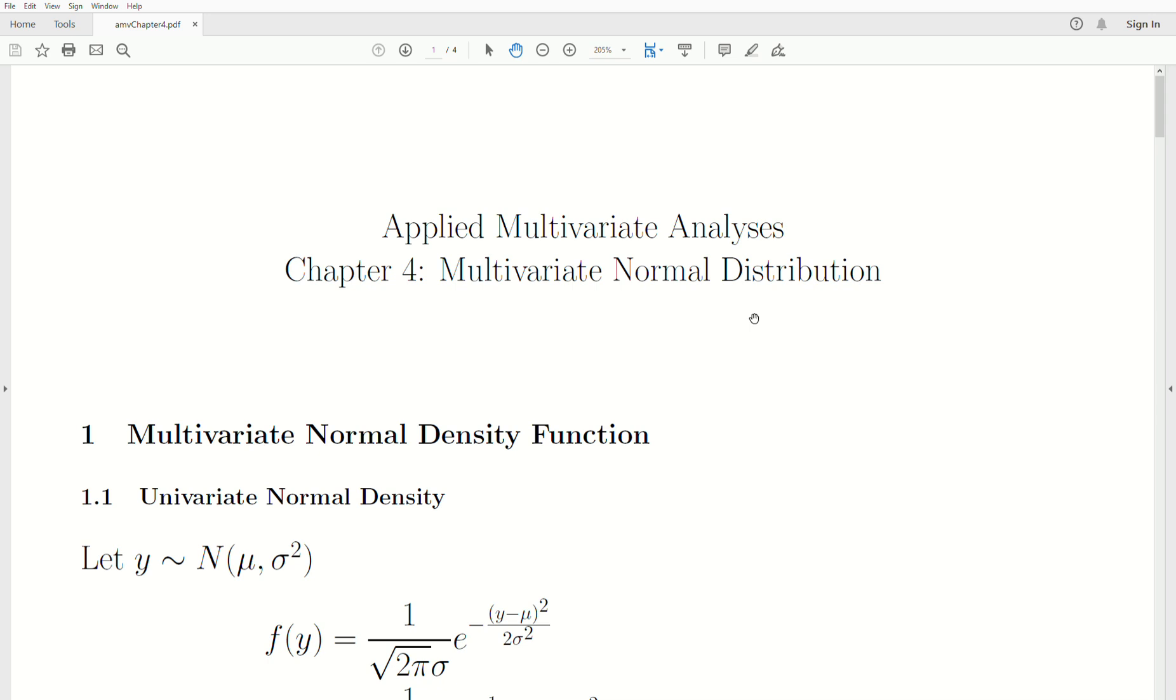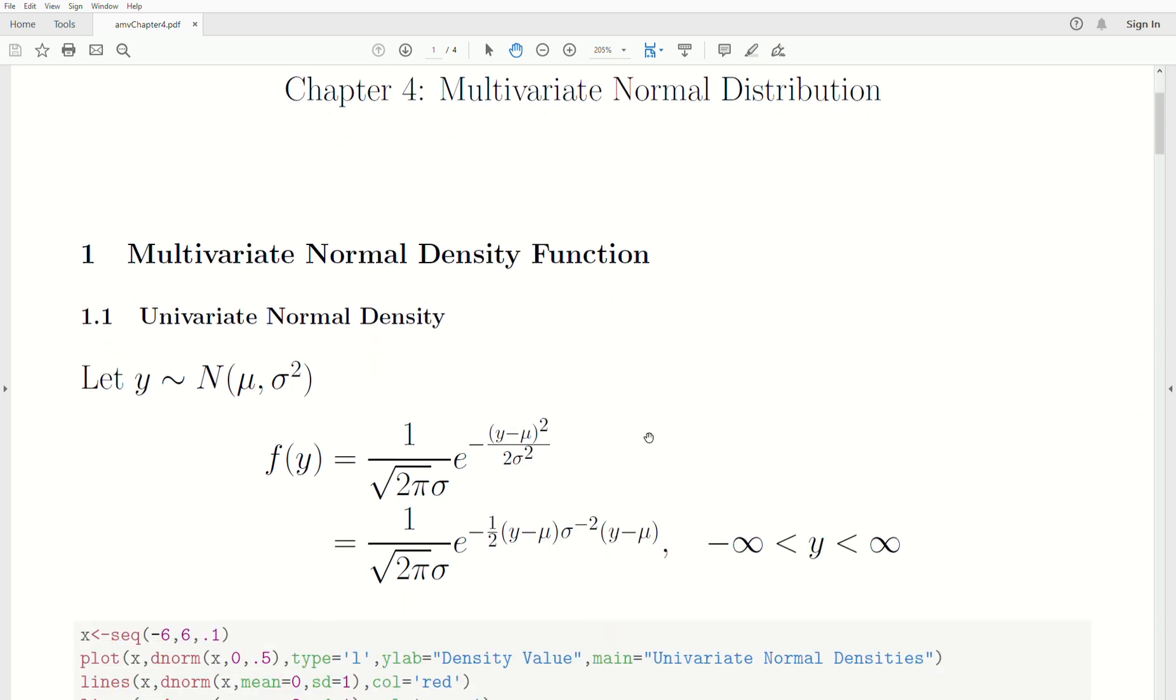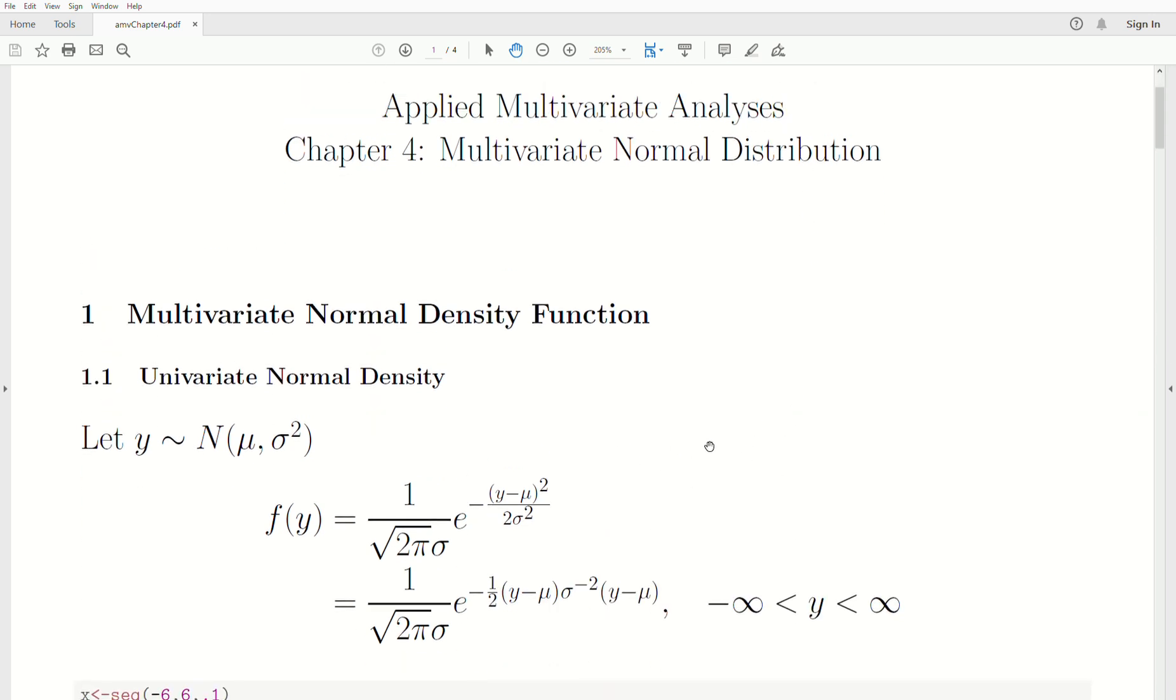Now, every multivariate technique that we're going to discuss relies heavily on this multivariate normal distribution, so it's important that we understand it and we understand many of the properties associated with it. So, let's first look at the univariate normal density, and if you've made it this far into the playlist, you're probably familiar with it.